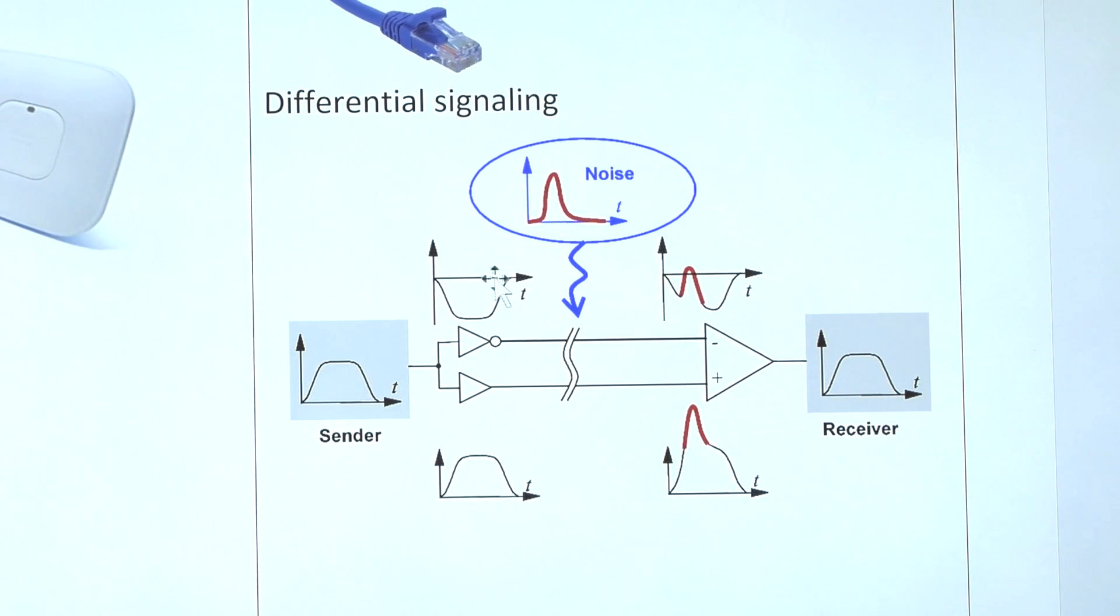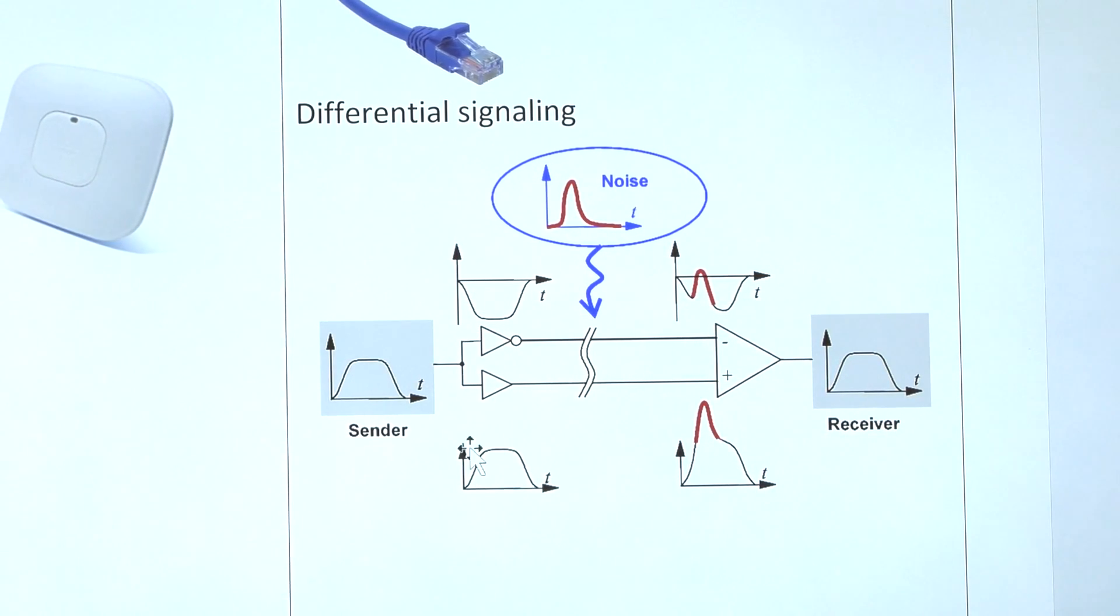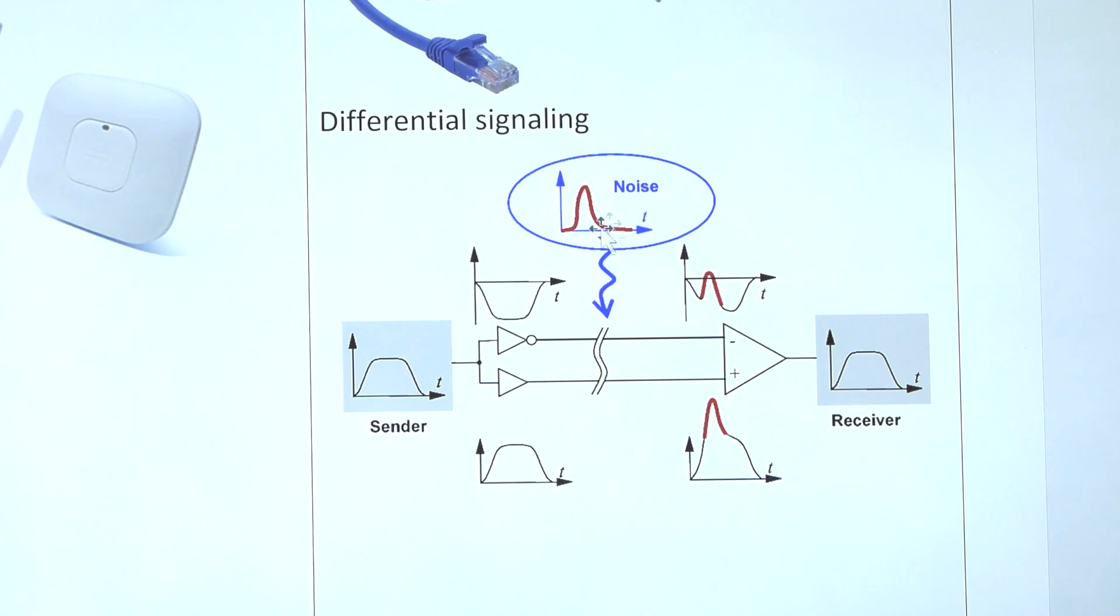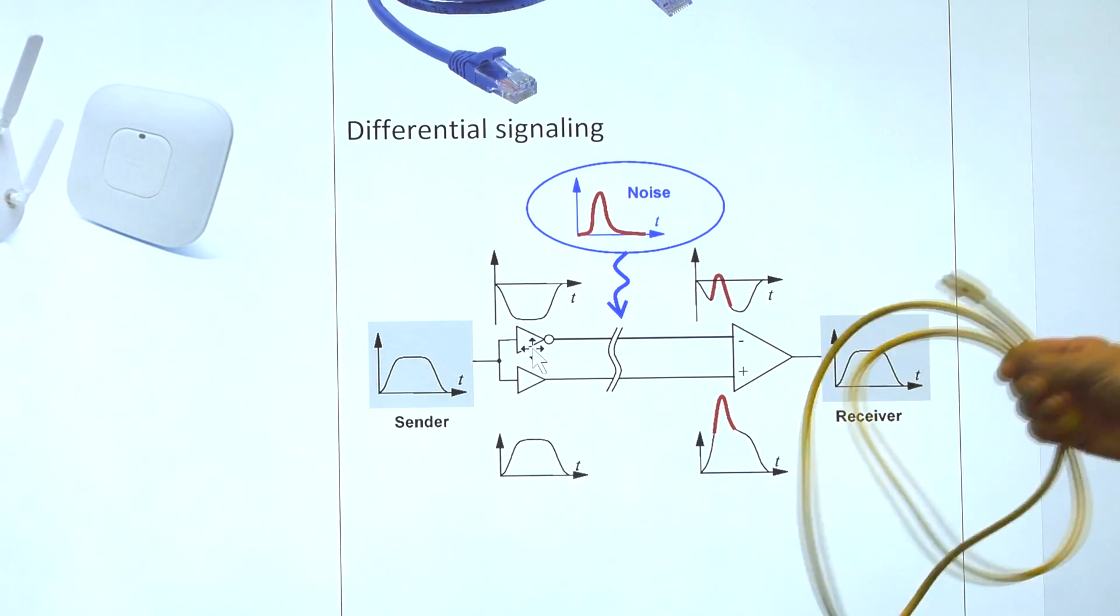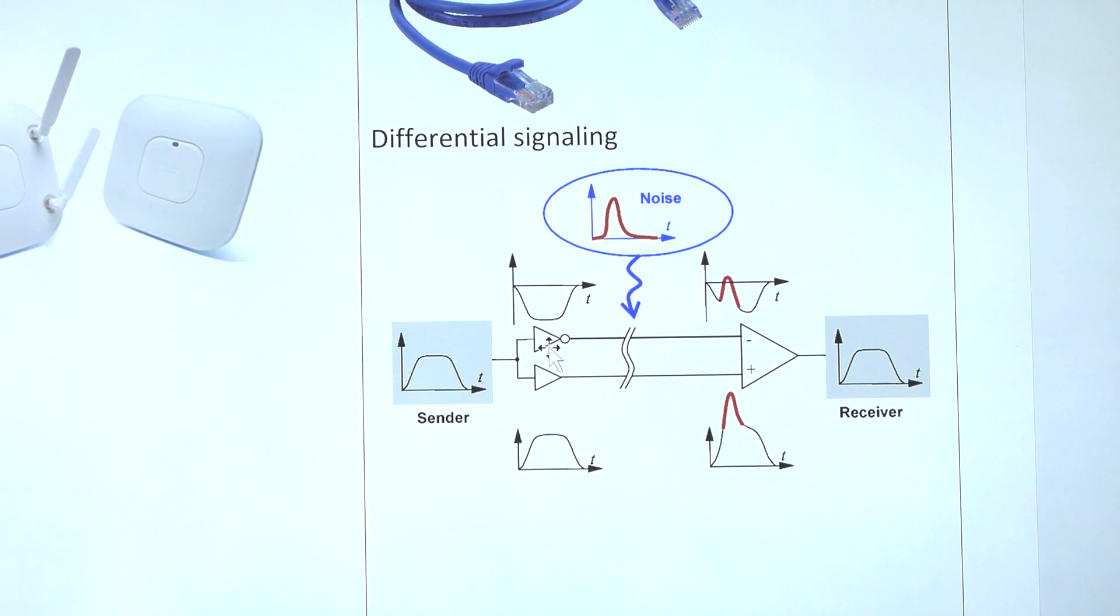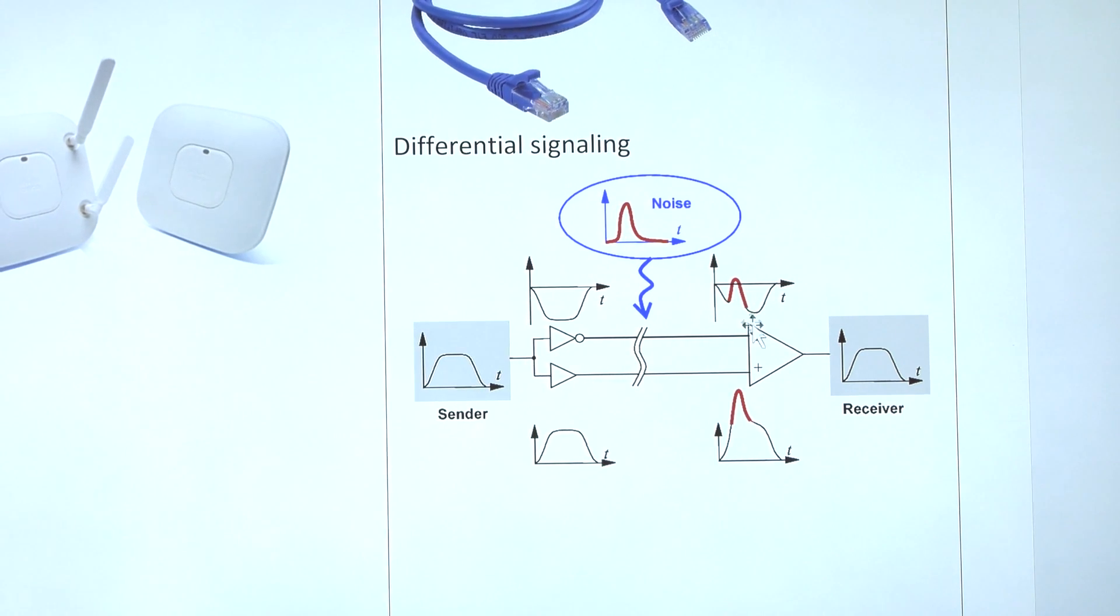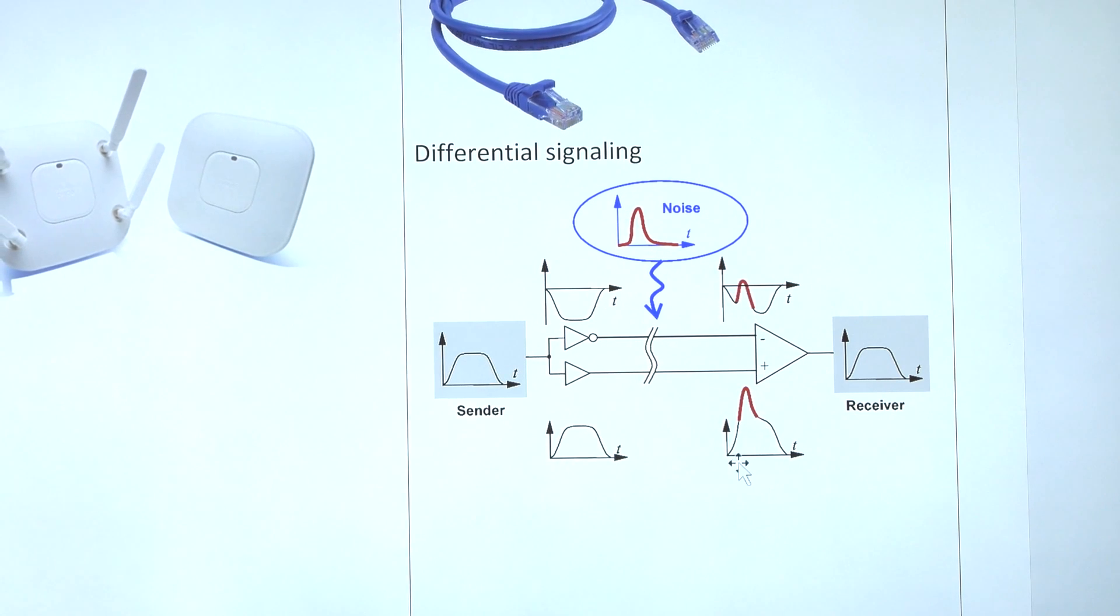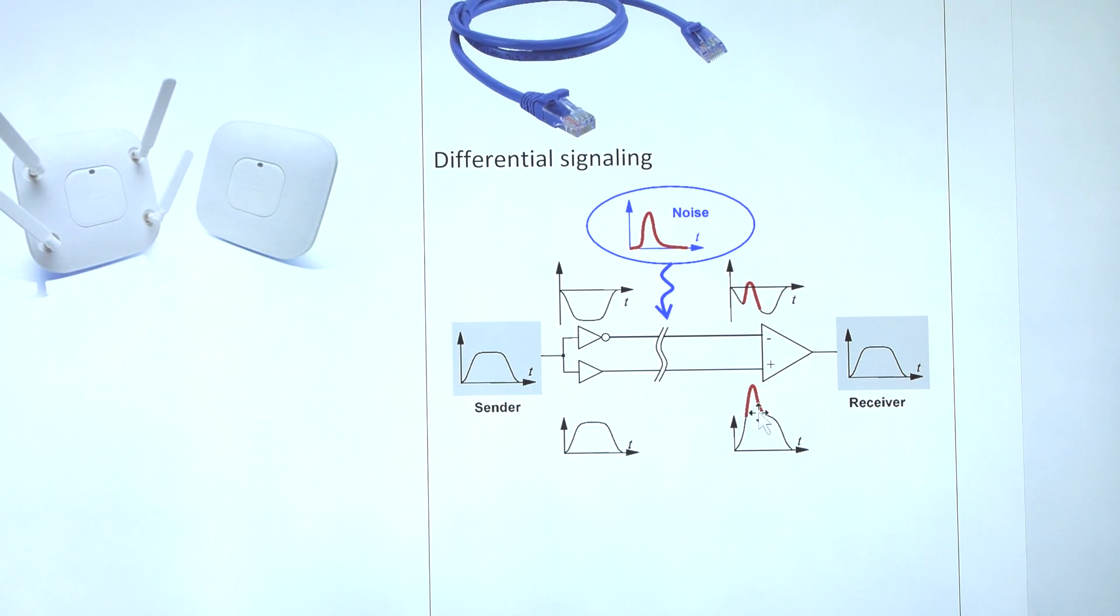When we send Ethernet across the cable, we use differential signaling, and what that allows us to do is you'll notice we send the pulse low and at the same time we send the pulse high. You get noise that's actually induced into this wire, say from the fluorescent lamp, you get noise in all of these wires.